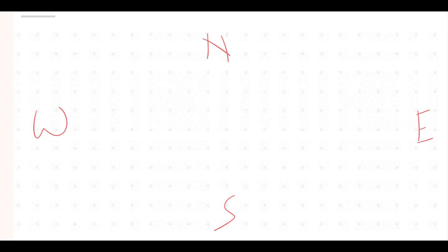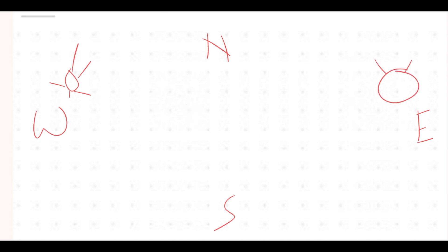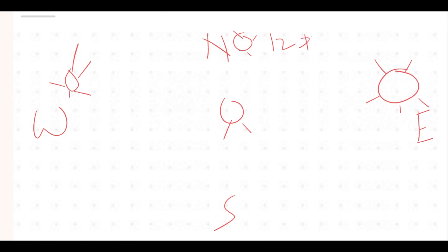In the evening, the sun sets in the west. So if you are standing anywhere, your shadow will fall on the east side. In the morning, the sun rises in the east, so your shadow will be on the west side. At 12 PM, no shadow will be created because the sun is directly overhead.